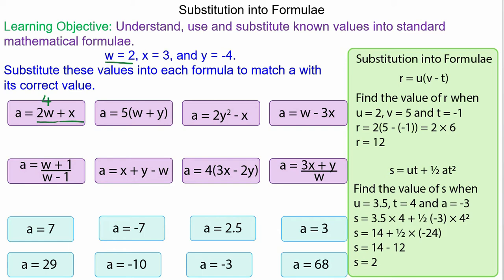2 is 4, and 4 plus x, 4 plus 3, is going to be 7. So we can match up the formula with the solution.